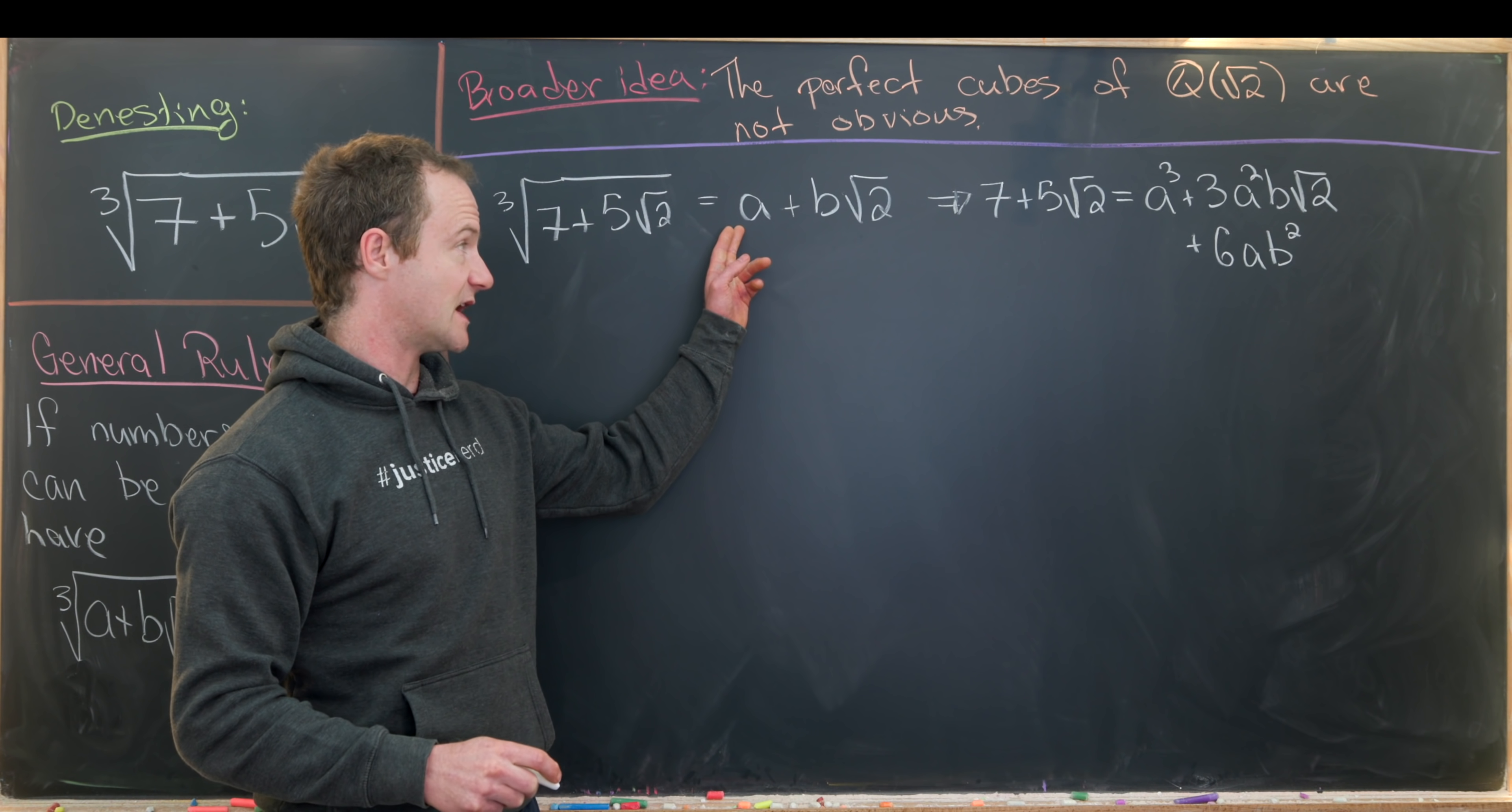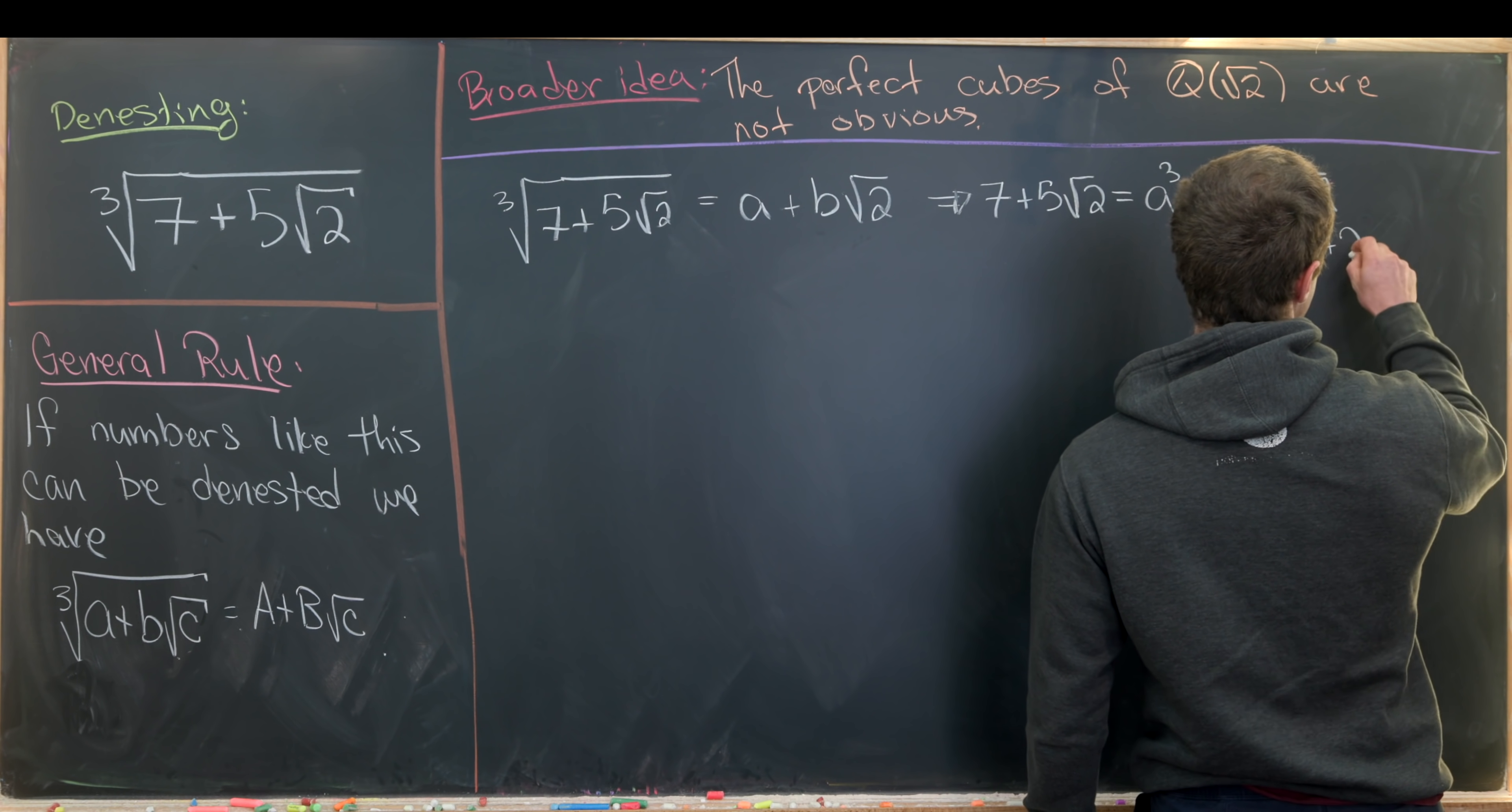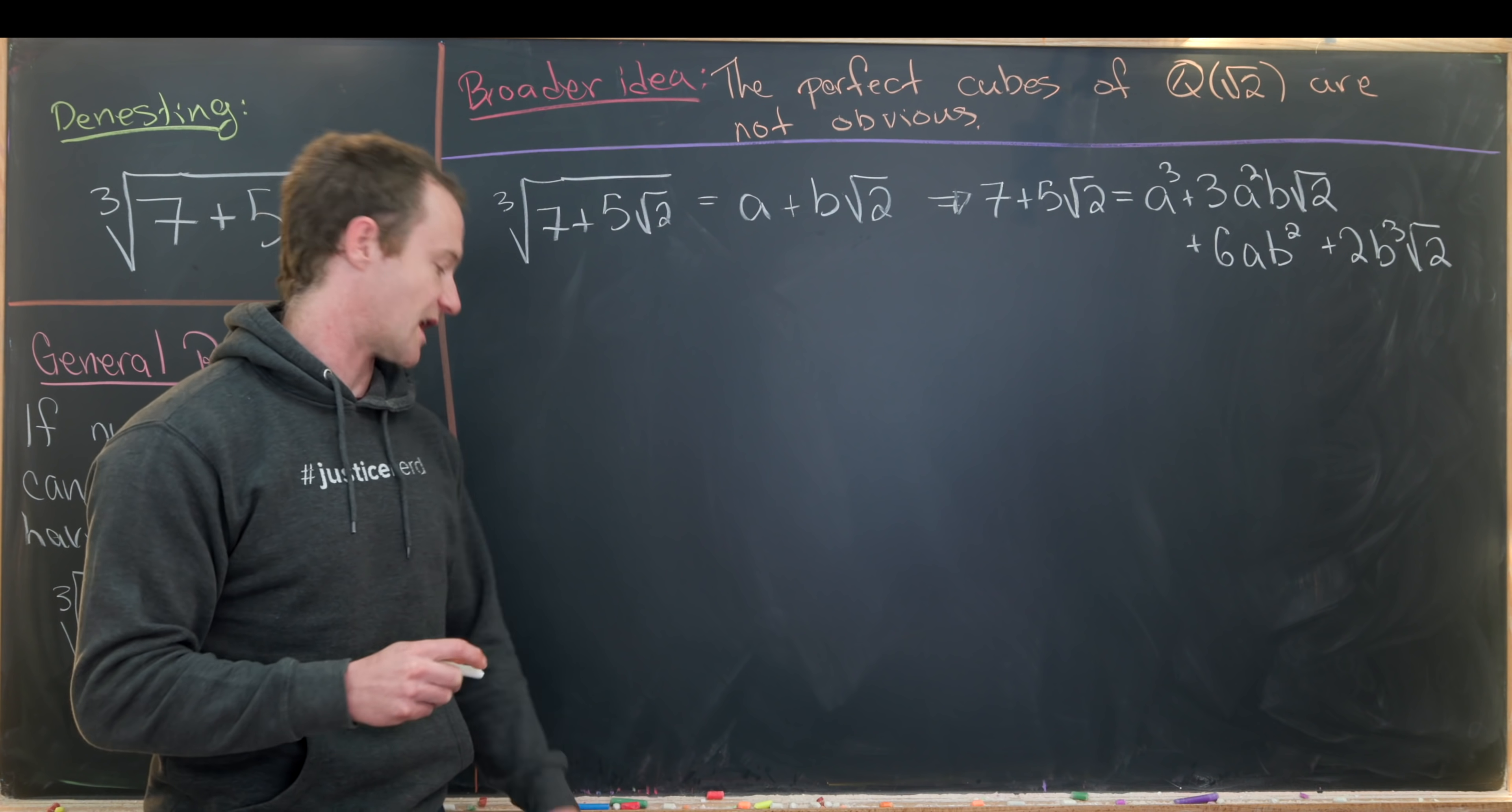So that's like three times a times b times the square root of two squared which gives us b squared times two. And then finally plus two b cubed times the square root of two. And that comes from cubing this guy right here.